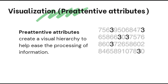Pre-attentive attributes are a valuable resource in data visualization. They make the processing of information easier by creating a visual hierarchy. Examples of pre-attentive attributes are color, size, or orientation. They are called pre-attentive because they are the first thing our brain pays attention to.